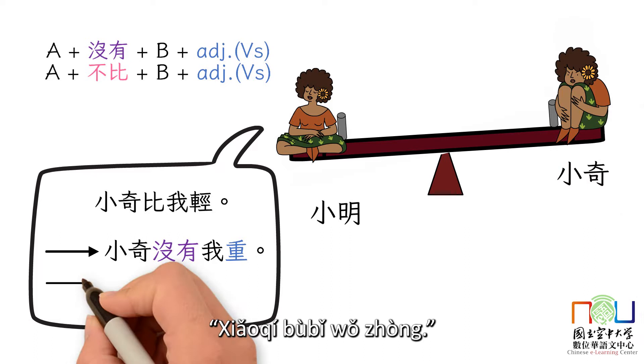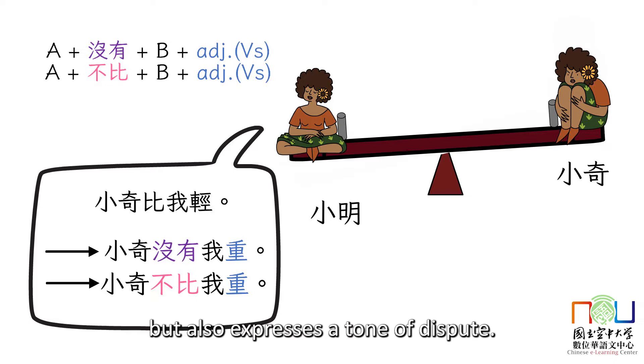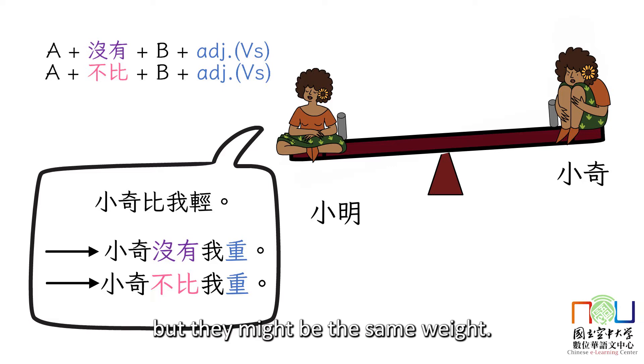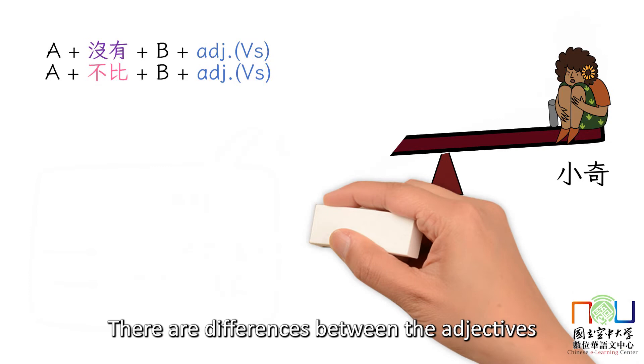Using 不比, you can say 小齐不比我重. This form not only compares things, but also expresses a tone of dispute. In this case, it shows that 小齐 is not heavier than 小银, but they might be the same weight.